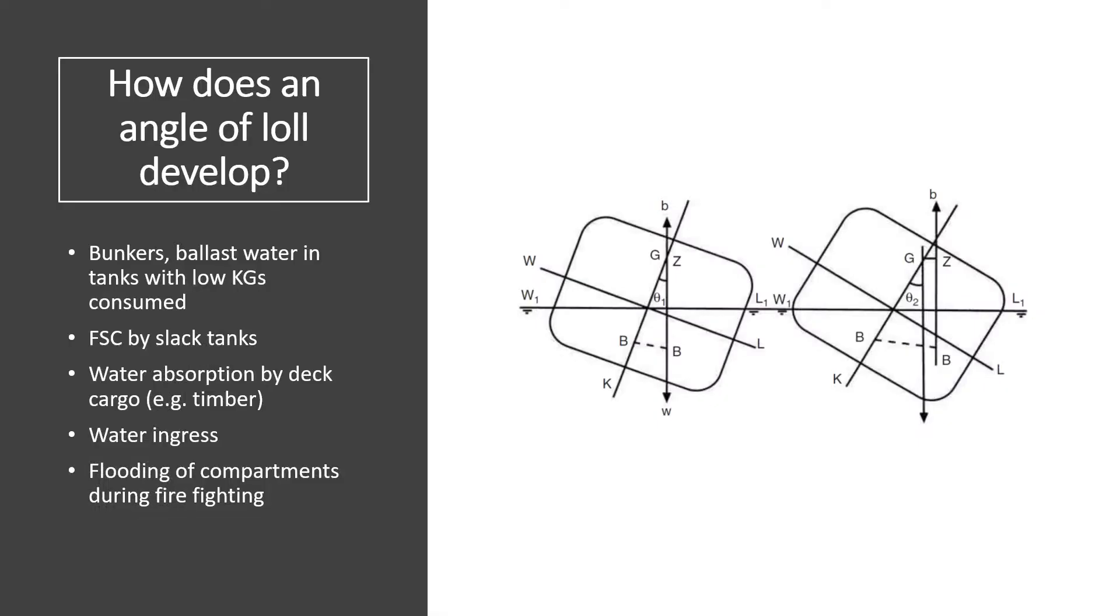Let's start with what an angle of loll is. Basically, an angle of loll develops when a ship is initially unstable with a negative GM, but then it regains positive GZ or righting lever at a listed angle. If you've seen my previous videos on ship stability, I demonstrated the procedure for calculating an angle of loll using formulas with numerical examples. But this is a theoretical understanding on how you should be able to not only identify angle of loll but also correct it.